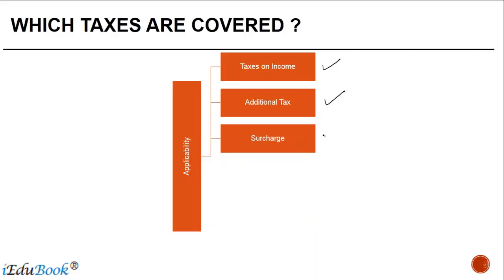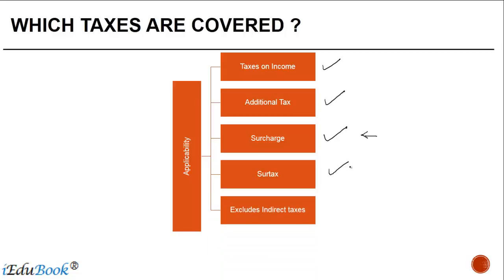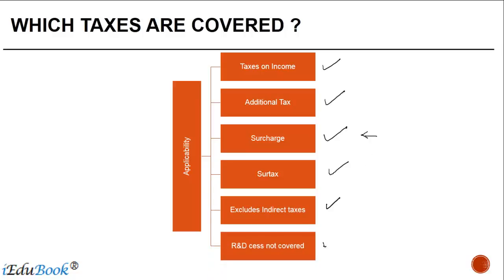Surcharge is covered — of course you need to find a mention for that in the treaty. Surtax as well, like we saw in the India-US treaty. It excludes indirect taxes like VAT, service tax, sales tax, etc. R&D cess is generally not covered, as we saw in the India-Netherlands treaty where the protocol specifically provides that R&D cess shall not be covered by Article 2.